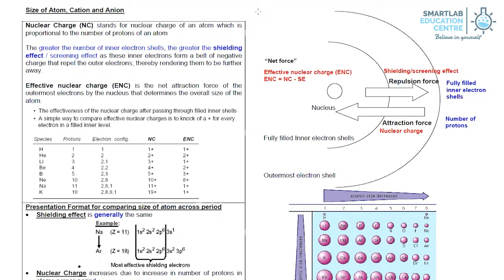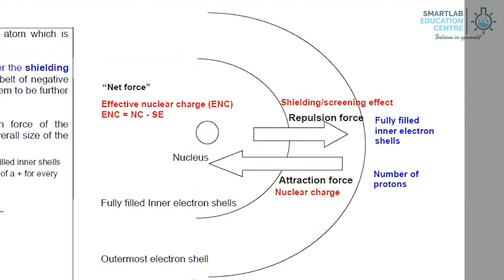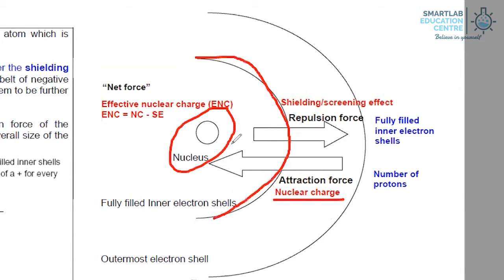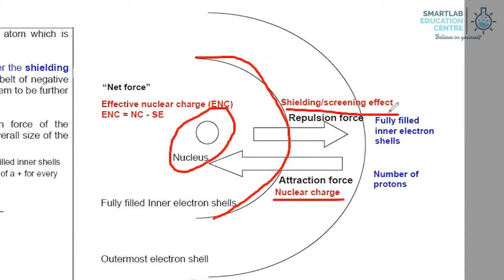Let us now take a look at the size of the atom before we move on to the ion. The size of an atom is governed by the size of an electron cloud. The two factors that determine the size of the electron cloud: one is actually the nucleus. The larger the number of protons, the higher the nuclear charge. And the more fully filled inner electron shells, the larger the shielding effect or screening effect.